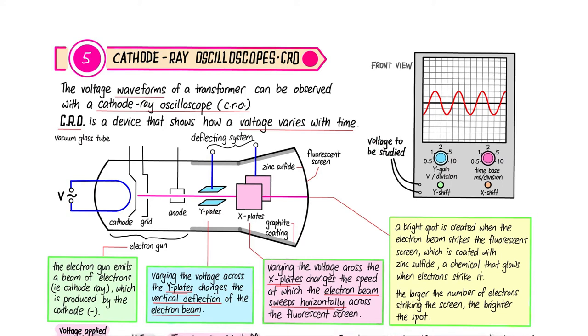Next, let's briefly look at the structure and how the CRO works. You can see here the first part is an electron gun where a beam of electrons is shot out.